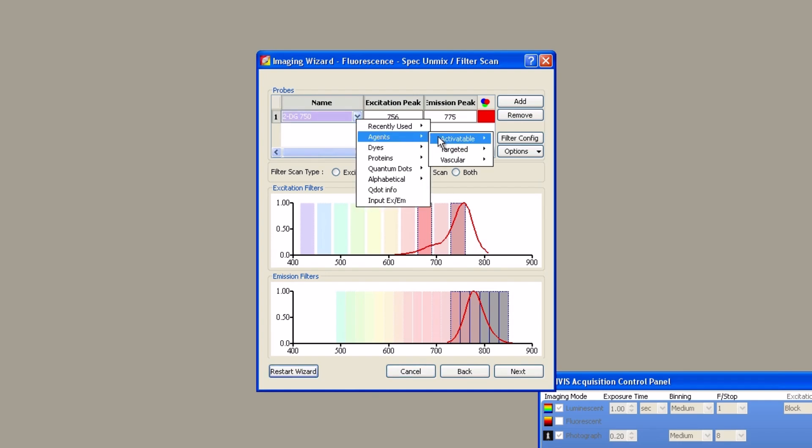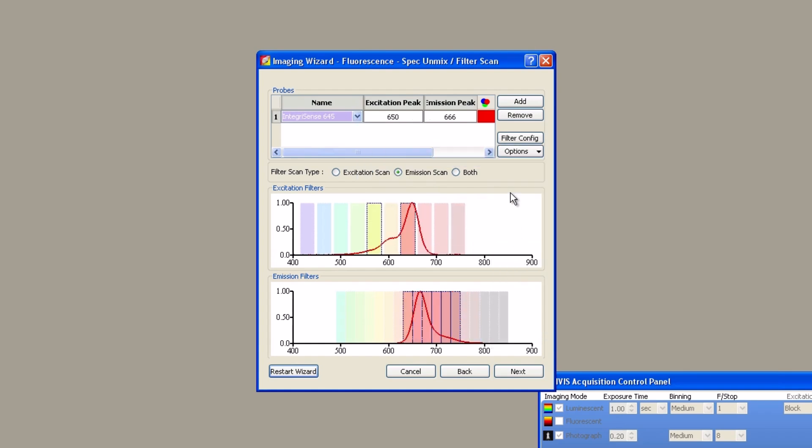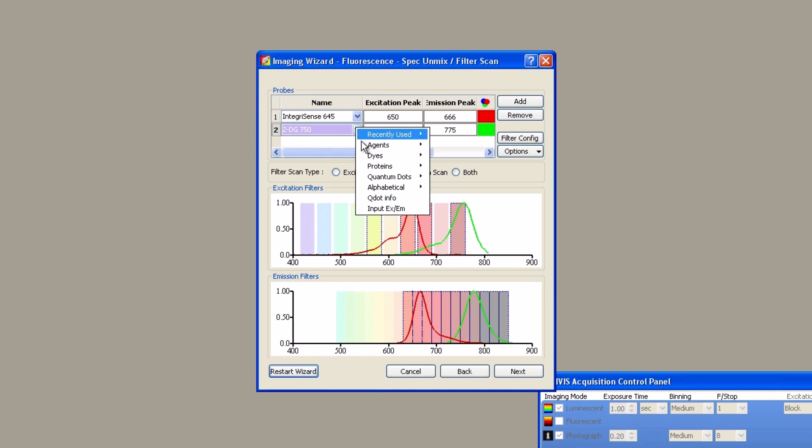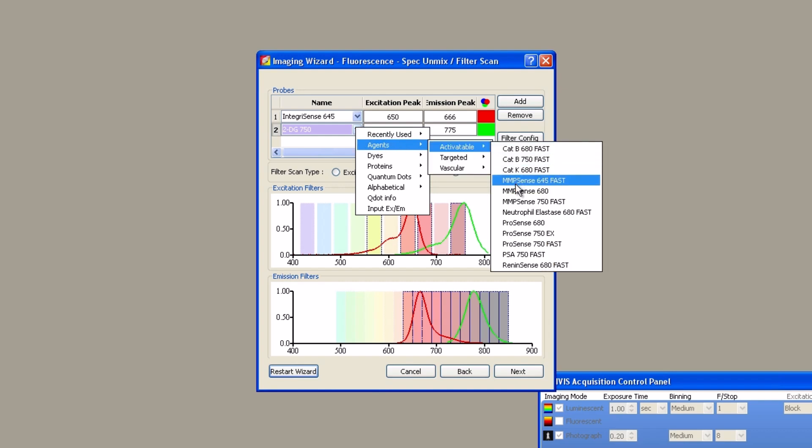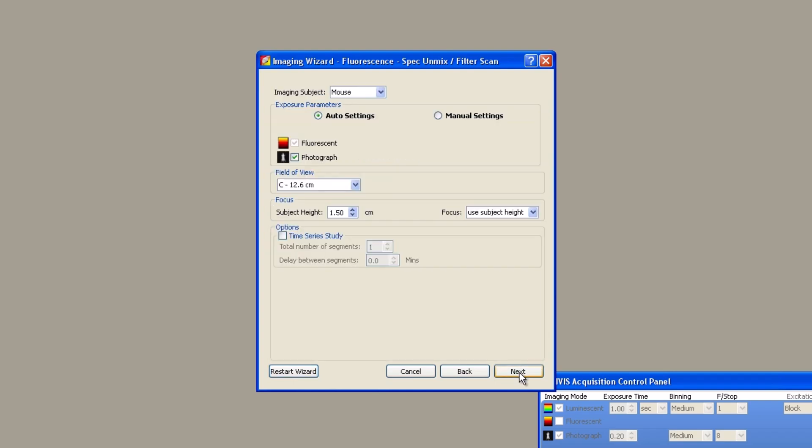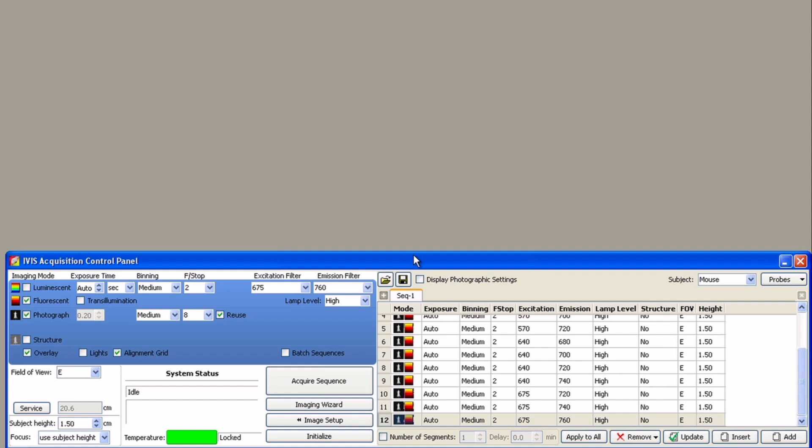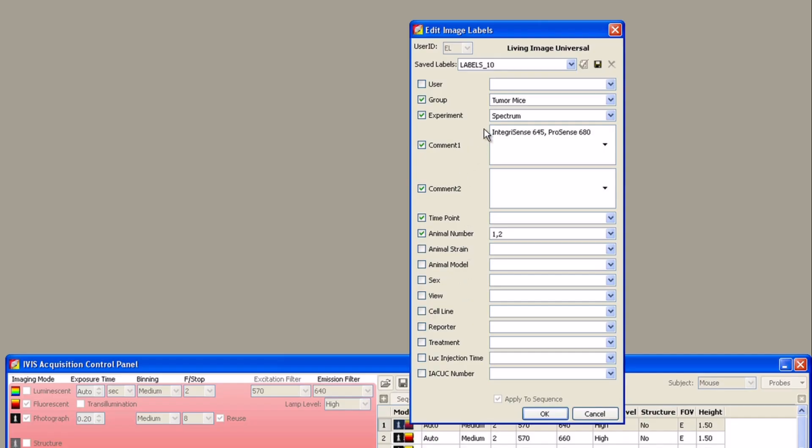As a default the wizard will set up acquisitions for one probe. To add a second probe click the add button. If your probes are pre-programmed in the software you can choose them from the drop-down menu. If not, you can manually enter the excitation and emission maxima and the software will choose the appropriate filters. Click next, complete the last window of the wizard to include your imaging subject, auto or manual acquisition settings, and your desired field of view. Then click next.